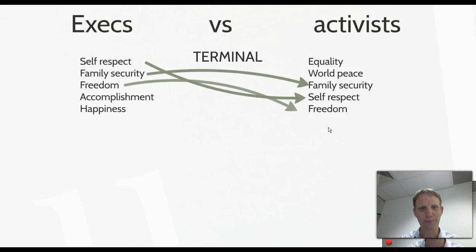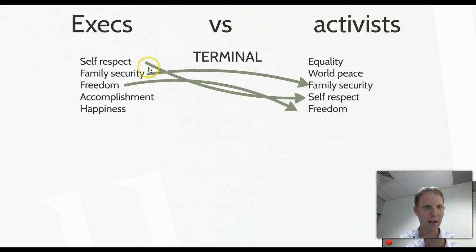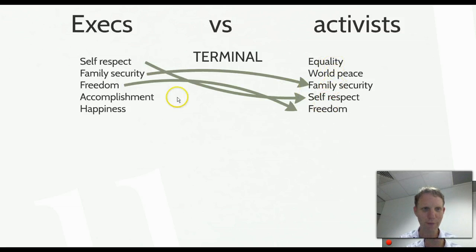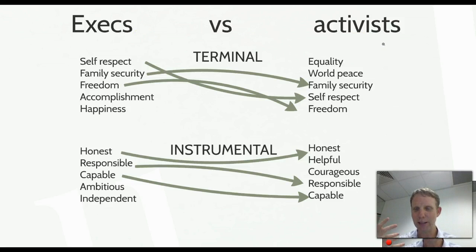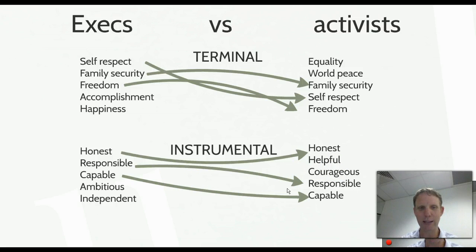There's a nice comparison in the textbook between executives and activists. Executives' top terminal values include self-respect, family security, freedom, accomplishment, and happiness. Activists' top terminal values include equality and world peace, with self-respect and freedom also shared. For instrumental values, both groups share honesty, responsibility, and capability, but courage and helpfulness are more important to activists, while ambition and independence are more important to executives.